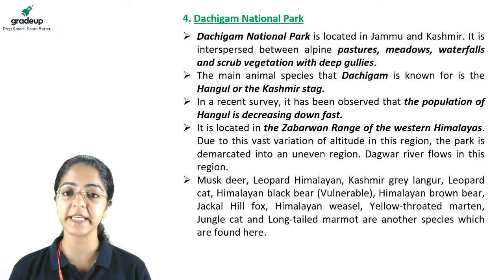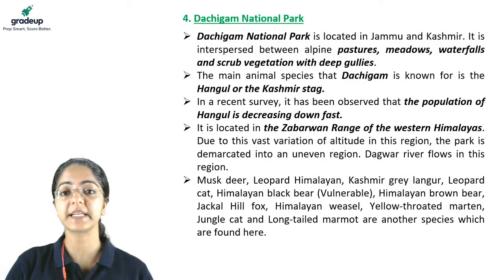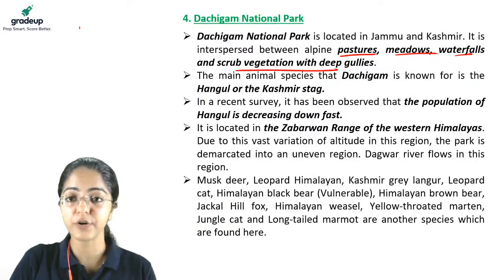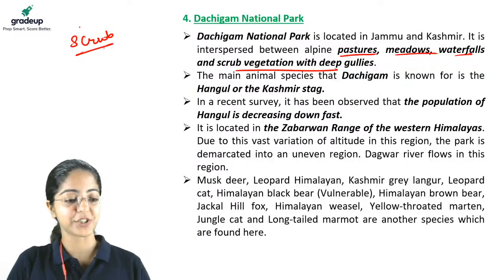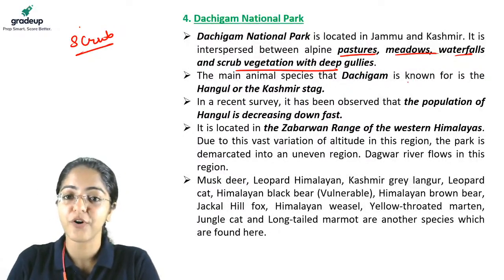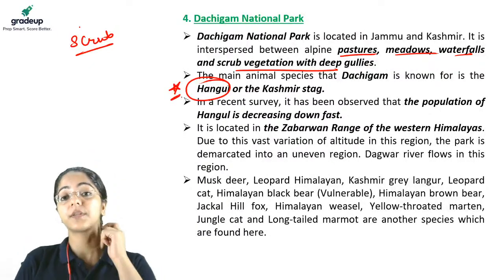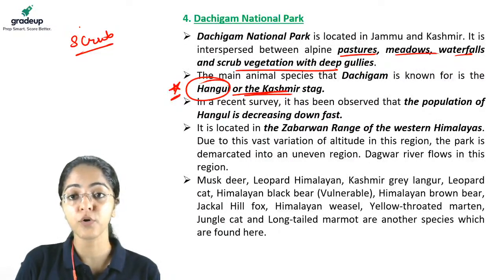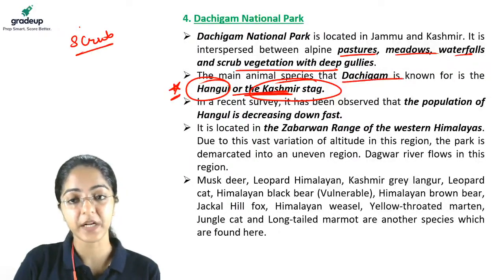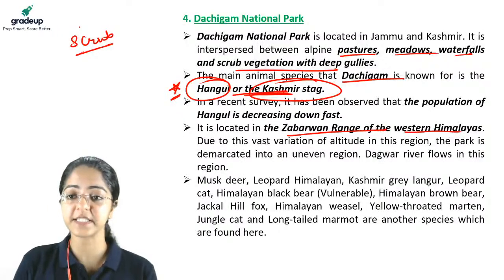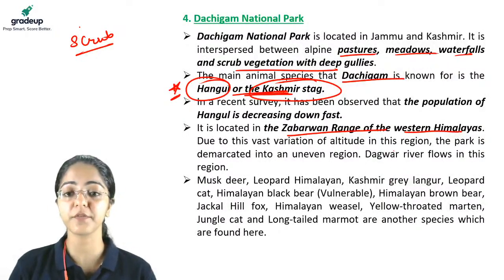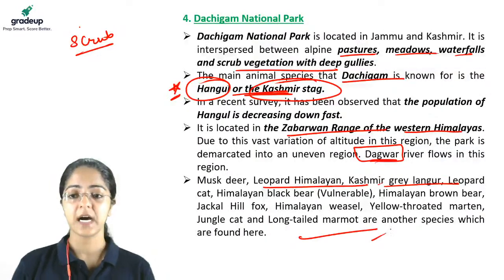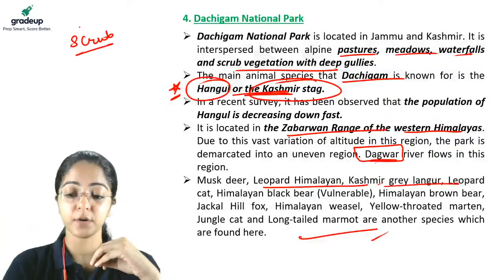Coming on to Dachigam National Park, which is in Jammu and Kashmir. It is interspersed between alpine pastures, meadows, waterfalls, and scrub vegetation — because it is at high altitude. The main animal species Dachigam is known for is the Hangul, also called the Kashmiri Stag. A very important exam question is: Hangul is found in which national park? The answer is Dachigam. It is located in the Zabarwan Range of the western Himalayas. The Dagwar River flows through this region. Other fauna include leopard, Kashmiri grey langur, and leopard cat.